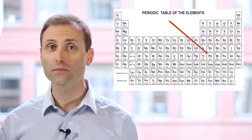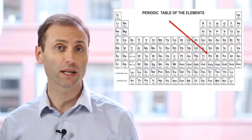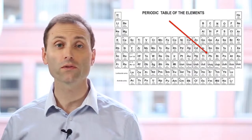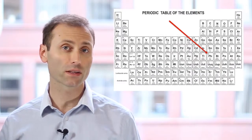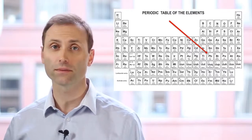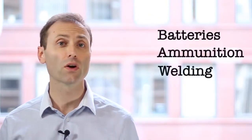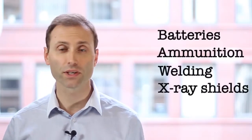Hi, this is Ian Kull bringing you an IAQA tech tip on lead. Lead is the heavy metal found on the periodic table of the elements. Lead is naturally occurring in soil and water, typically found as a lead compound instead of a metal. It's been used in a variety of products. Lead was once common in paints, gasoline, pipes, and ceramic glaze. It's still used in the production of batteries, ammunition, welding materials, and x-ray shields.